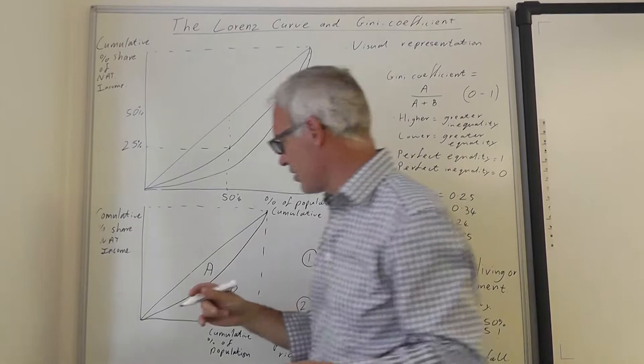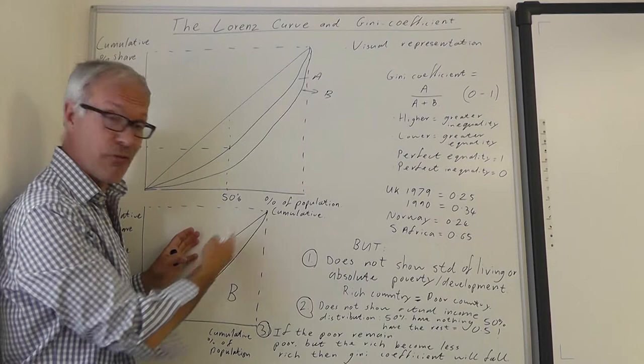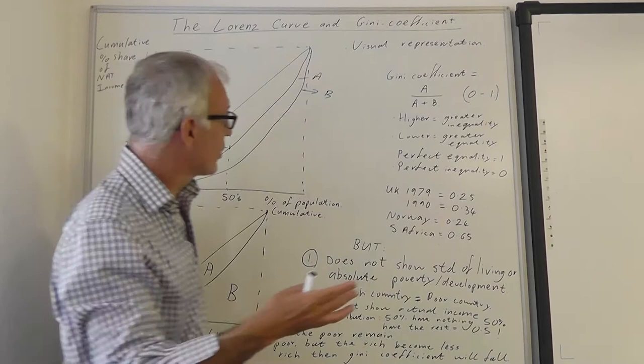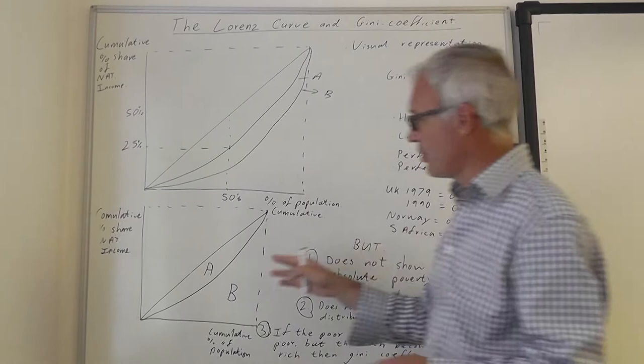The Gini coefficient just measures the area A divided by A plus B. This measures how far away by area we are from the 45 degree line, basically. There are quite complicated calculus equations for measuring this, but for the purposes of this level, we'll just stick with a fairly simple equation, which is basically area A divided by A plus B.